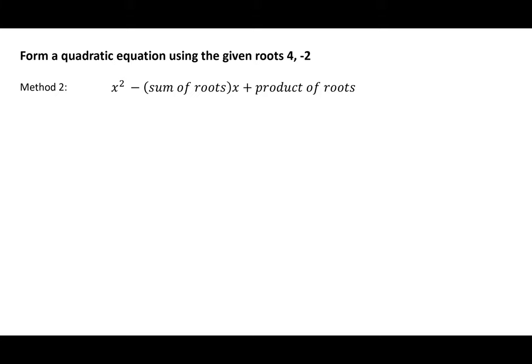Using this, we will find the quadratic equation for the given roots 4 and minus 2. The first thing we will do is state each root: x equals 4 and x equals minus 2. We then find the sum of the roots, which means we add the roots together. Our sum of roots is 4 plus minus 2, which equals 2.